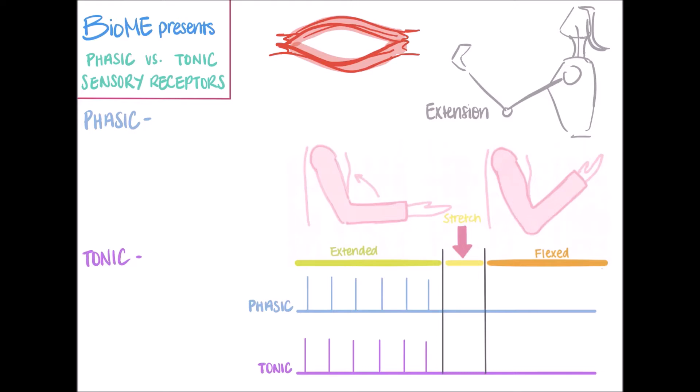We can use a graph to more clearly visualize how these two types of sensory receptors differ in their firing. I am going to be using the example of muscle spindles, which conveniently consists of both types of receptors.